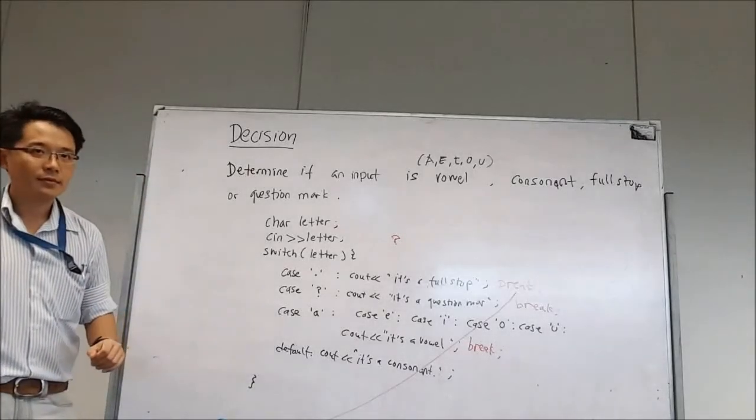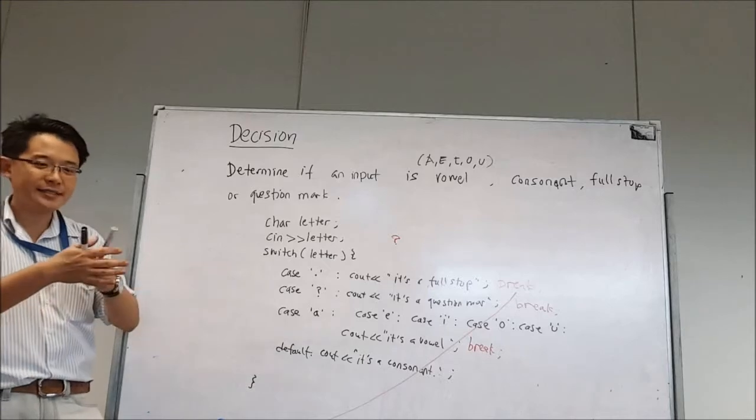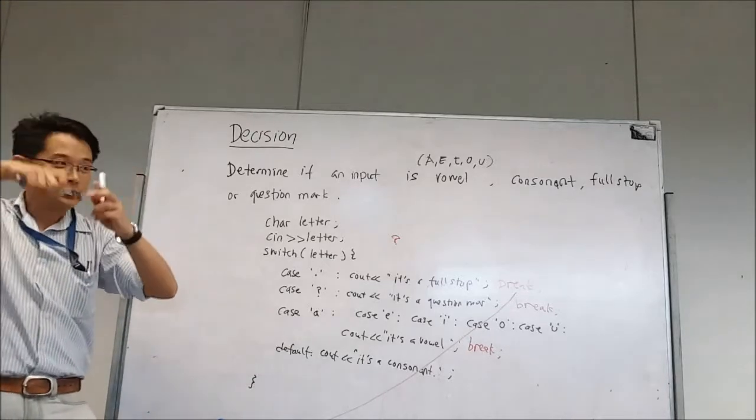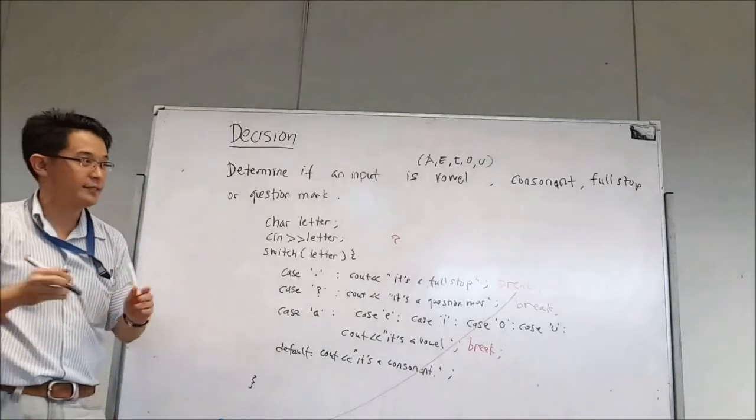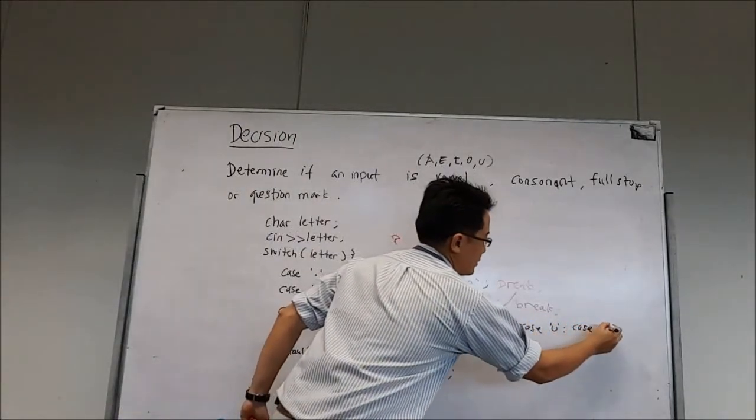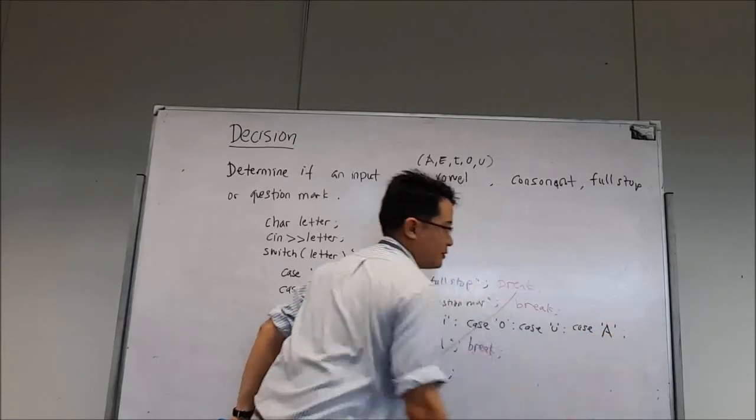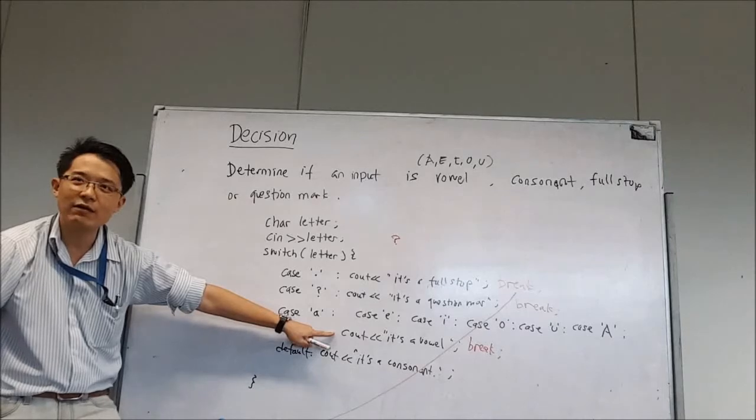Case A, O, O, A, E, I, O, U. Okay, how about uppercase A? How about uppercase A? So because uppercase A, lowercase A are different, you know, when it comes to keyboard they are different symbols. So you just add here case A and still sharing the same C out is a vowel, break.